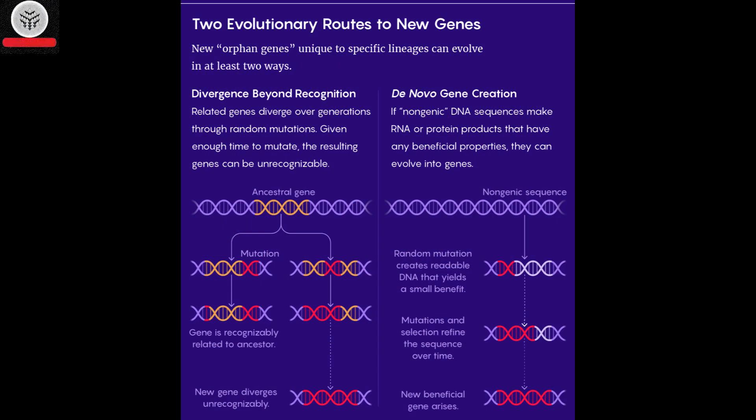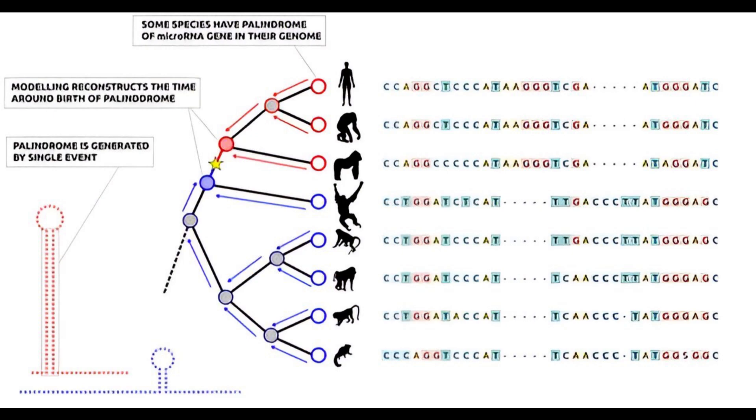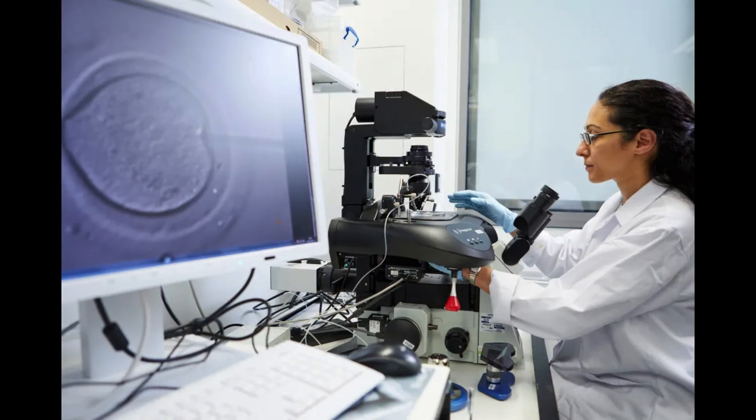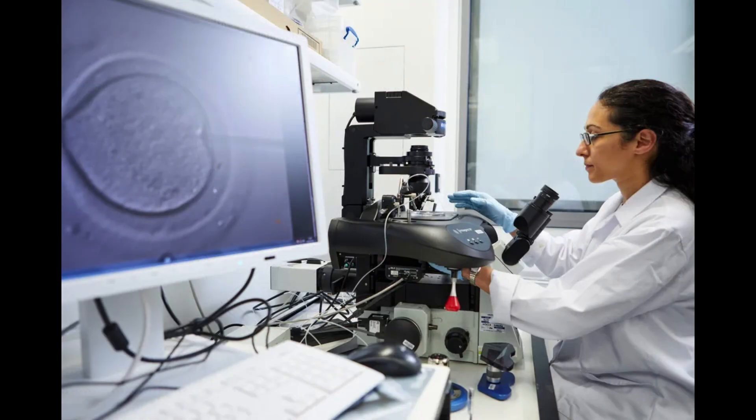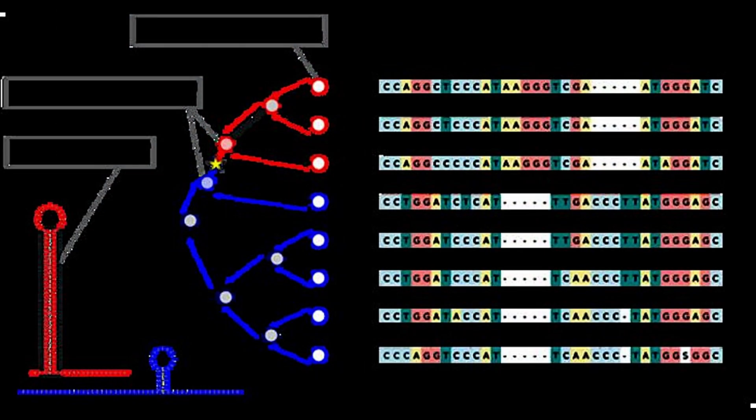Usually, mutations manifest as single-base errors, similar to accidental keystrokes on a keyboard. Our research focused on a mechanism that gives rise to more significant errors, resembling copying and pasting text from one context to another. Of particular interest were instances where the copied text was reversed, resulting in palindromes.